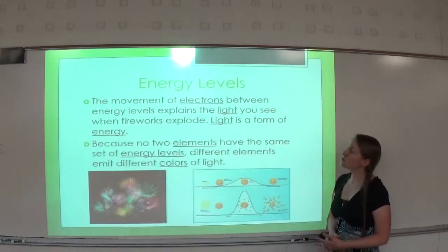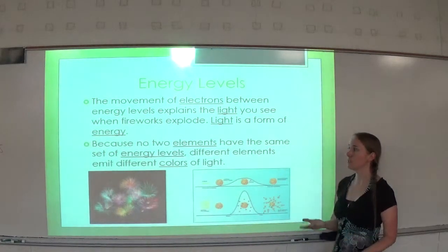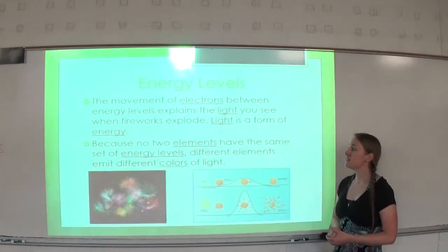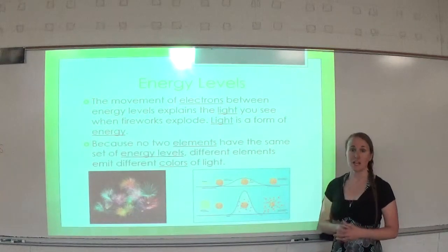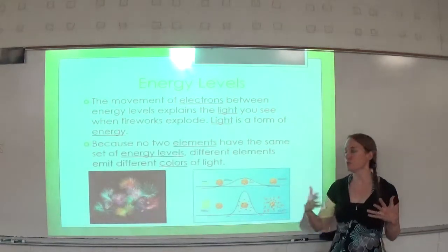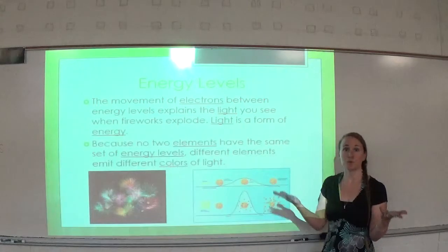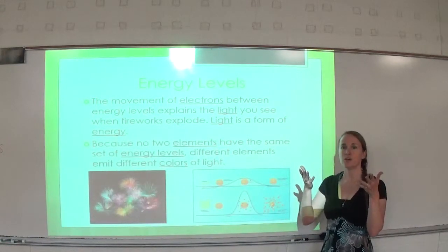The movement of electrons between energy levels explains the light you see when fireworks explode. Light is a form of energy. Because no two elements have the same set of energy levels, different elements emit different colors of light. What happens is when we provide energy through, for example, fireworks, through fire, through heat, those electrons gain energy and jump to a higher energy level.